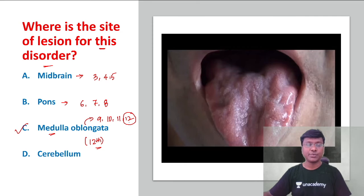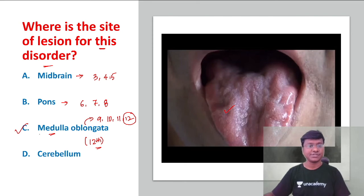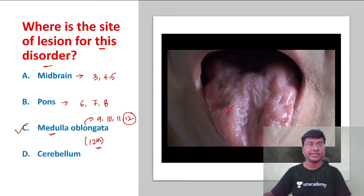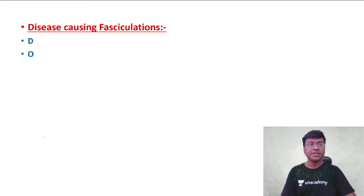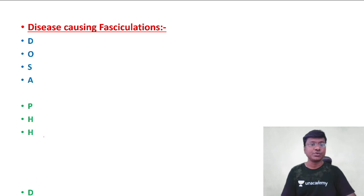Whenever there is a 12th cranial nerve nuclei lesion or 12th nerve lesion, the individual will have fasciculations. That 12th cranial nerve nuclei originates from the medulla oblongata, so the site of lesion is in the medulla oblongata.